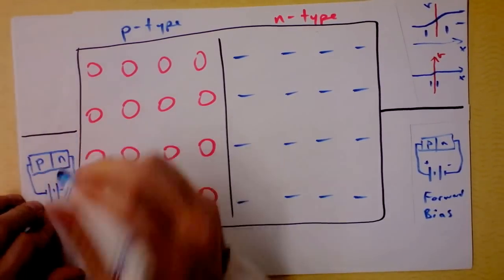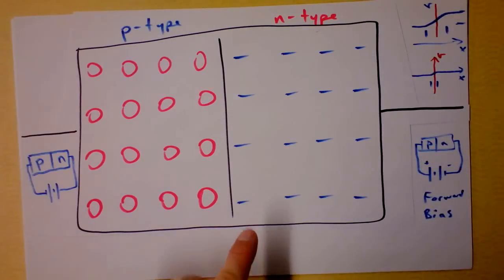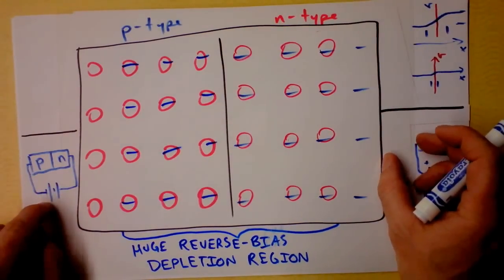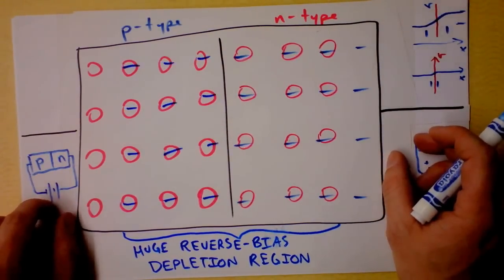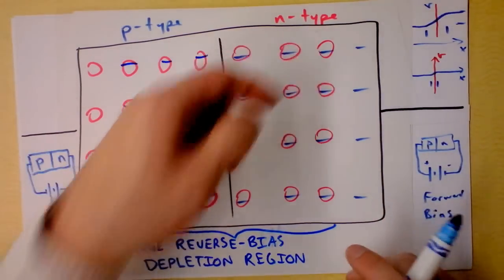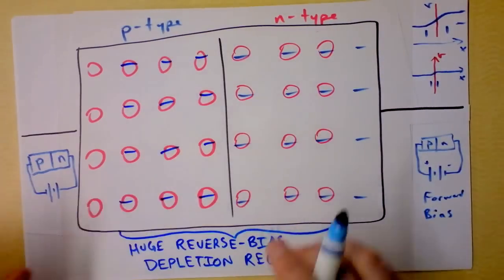And this diode will say no simply because we've now increased the built-in electric field. As a consequence of putting the battery the wrong way in this reverse bias, we have even more holes from the left side going over to the right side and even more electrons from the N-type going over into the P-type.